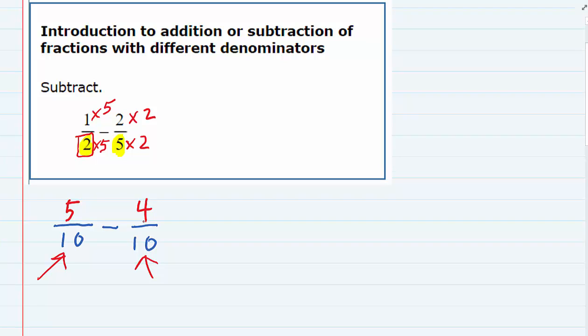So what we have done is we have rewritten the problem, but now we have common denominators. Both of our denominators are 10, and that means that when we subtract, we're still going to have 10 for the denominator.